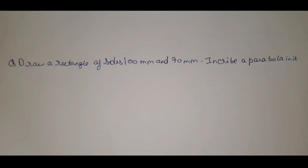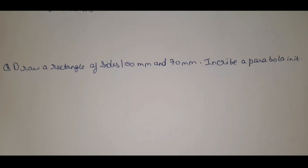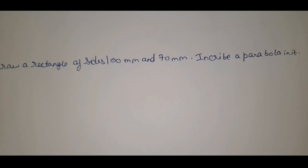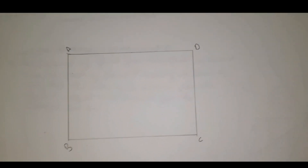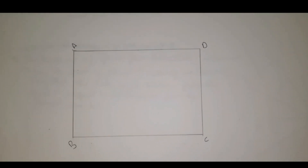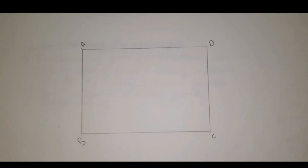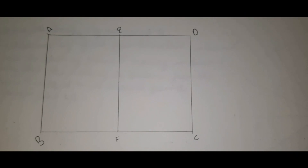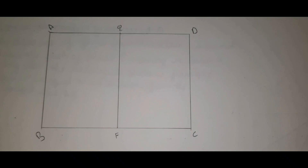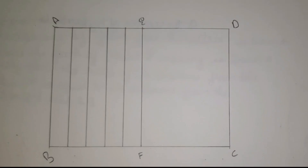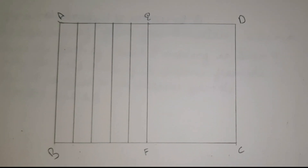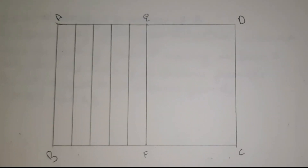The next question is: draw a rectangle of sides 100mm and 70mm and inscribe a parabola in it. We will start by making rectangle ABCD — AD is 10cm and AB is 7cm. The second step is to divide the whole rectangle into two equal halves: ABFE and EFCD. In the third step, divide rectangle ABFE into 5 equal parts.